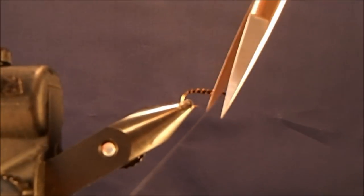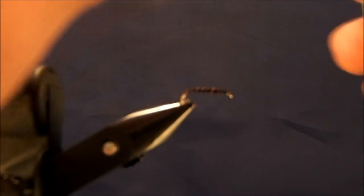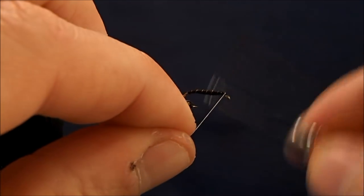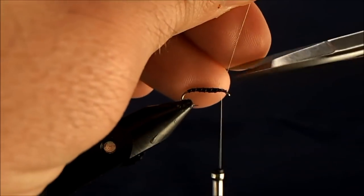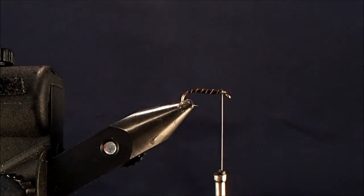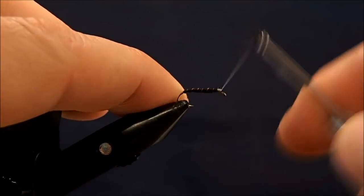Cut off the excess and switch my thread, and now I'm going to use an ADOT tan thread just to make the head. So I'll put a couple of wraps to get me started. Trim that off and now just start to make a thread head to this.